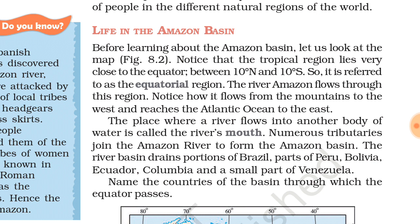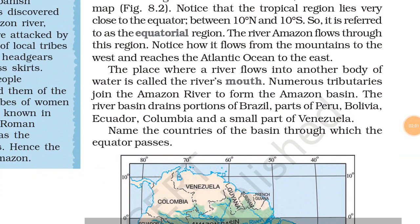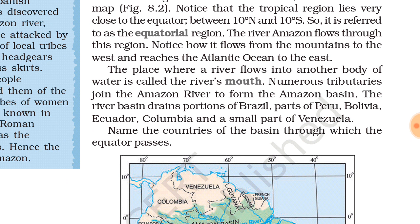Sunlight is abundant and there is a lot of rainfall, so this is a tropical evergreen forest. The river flows into other water bodies and eventually into the oceans. We can see the mouth of the river where many tributaries join the Amazon River, making its mouth. The Amazon Basin drains the areas of which region?